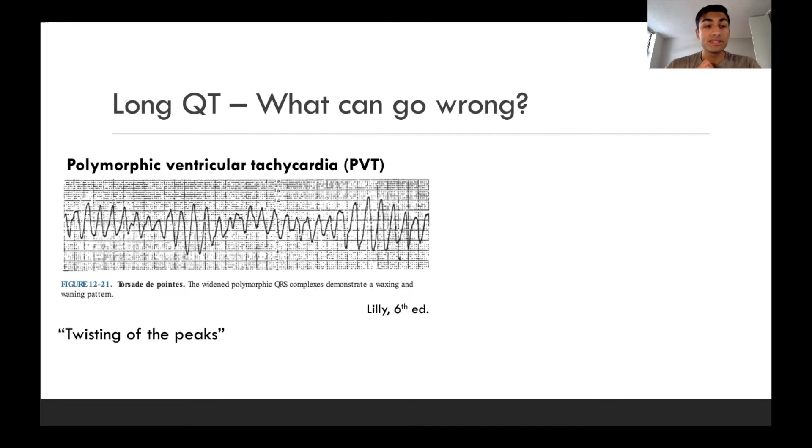Now, lastly, if the QT interval is lengthened, so we have a long QT, what are some of the things that can go wrong? So the main concern is what's called polymorphic ventricular tachycardia, or PVT. And when we have this EKG pattern in the setting of a long QT interval, it's called torsade de pointes. And this is a French phrase, which literally means twisting of the peaks. And so you can see it's characterized here by this undulating pattern of varied ventricular activity, as it's twisting around the isoelectric baseline of the EKG. And this is thought to be caused by early after depolarizations that are precipitated by the long QT interval.